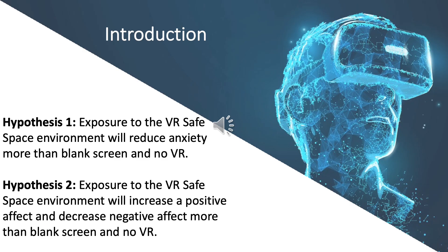VR aims to optimise the outcomes of existing effective principles, which are distraction and relaxation. VR may be used to further strengthen distraction from anxiety through being fully immersed in a safe virtual environment. Previous research has found virtual reality effective in distracting individuals from a certain environment, such as during medical procedures. However, there is limited research investigating the distraction effect of VR for cognitive processes. This VR system uses a safe space virtual environment designed to be a relaxing escape from the real world. It was expected that participants may be distracted from anxious stimuli and demonstrate less anxiety and negative affect and increased positive affect. Our first hypothesis was that exposure to the VR safe space environment will reduce anxiety more than blank screen and no VR conditions. The second hypothesis was that exposure to VR safe space will increase positive affect and decrease negative affect more than blank screen and no VR.